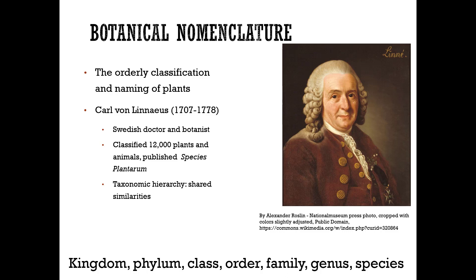The person really responsible for the nomenclature we use today is Carl Linnaeus, who named and classified 12,000 plants and animals based on shared similarities. His system uses the hierarchy: kingdom, phylum, class, order, family, genus, and species.